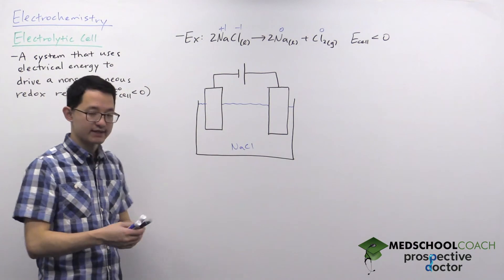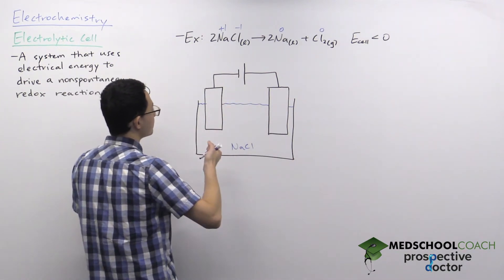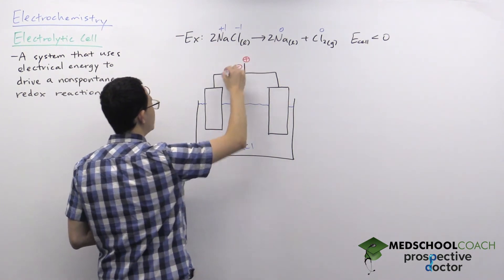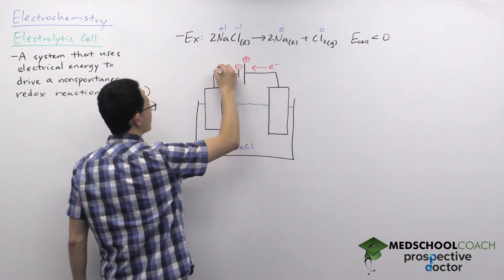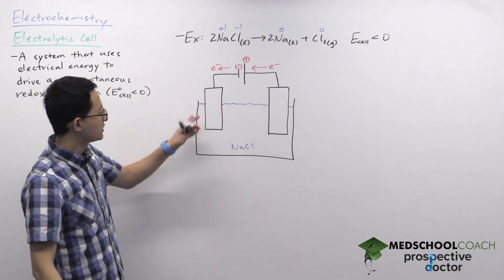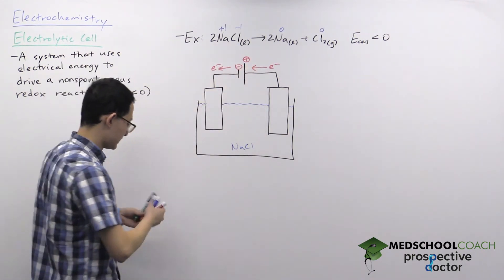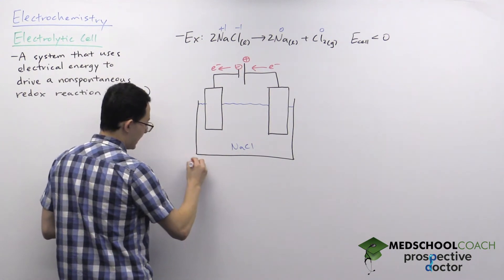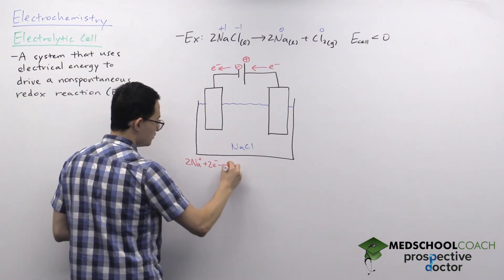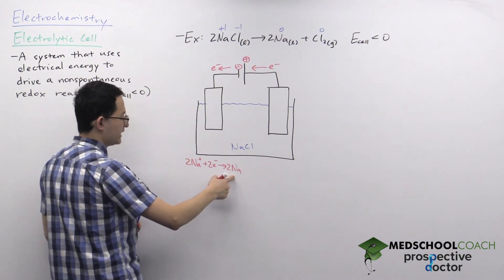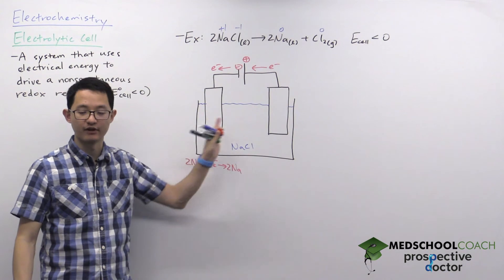The battery dictates the direction of the flow of electrons. The battery has a positive plate (large) and a negative plate (small), so electrons naturally want to move toward the positive plate and away from the negative plate. Electrons flow to the electrode where reduction occurs, and since sodium is getting reduced, we write the half reaction: 2Na⁺ + 2e⁻ → 2Na. The electrodes here are inert — they are not participating in the redox reaction.